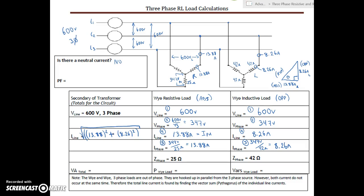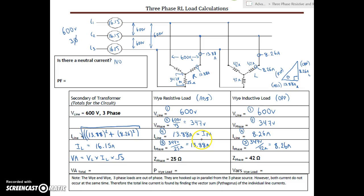Applying Pythagoras gives us a total line current of 16.15 amps. Because both loads are balanced, all three lines carry exactly 16.15 amps. Line 1, Line 2, and Line 3 are all balanced at 16.15A. That completes Step 5 — finding the total line current.